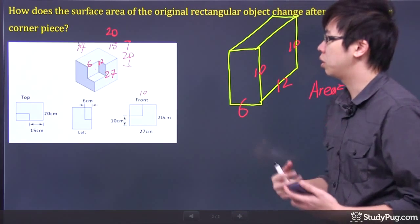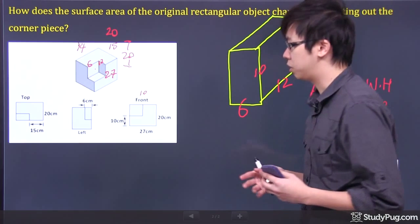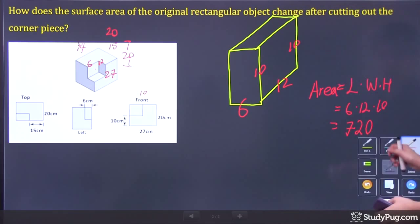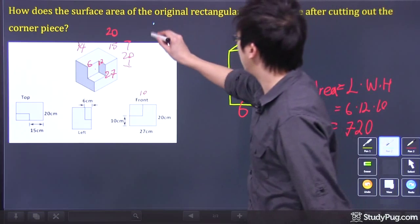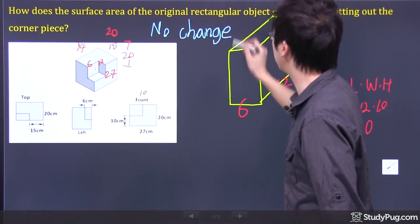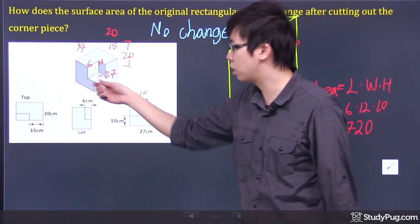Well, this question here doesn't really need the calculation, because if you think about it, the surface area did not change at all. So the answer to that question right now, I would just say there's no change. Now you're probably thinking like, how is that possible? Because you cut out one piece from that original rectangle, right? This piece is being cut out.